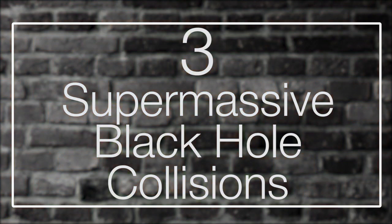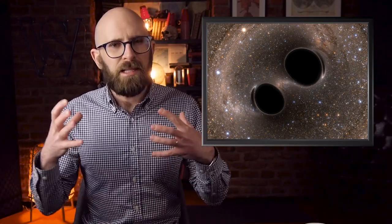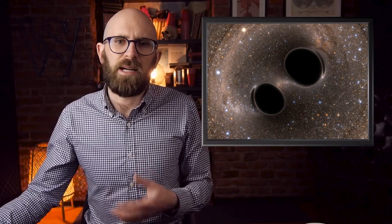Number 3: Supermassive Black Hole Collisions. In galaxies where two supermassive black holes are in the process of colliding, it's far more likely that these black holes will feed on the stars that surround them. In our galaxy, something like this might happen every 10,000 to 100,000 years, but during a merger, this could increase to once every 10 to 100 years.